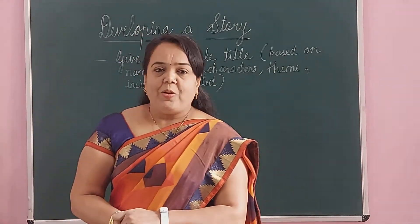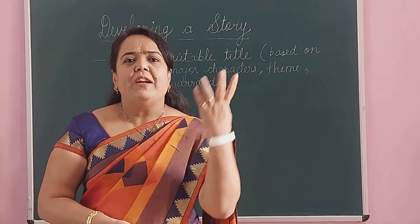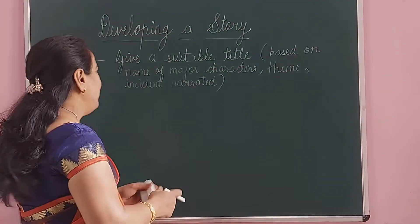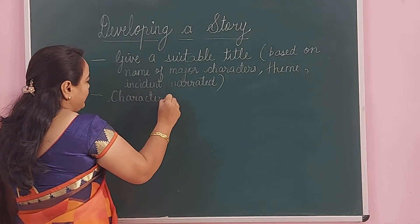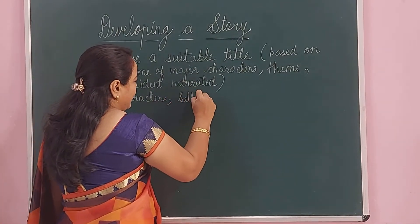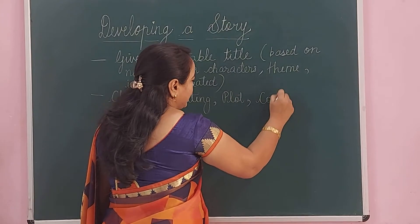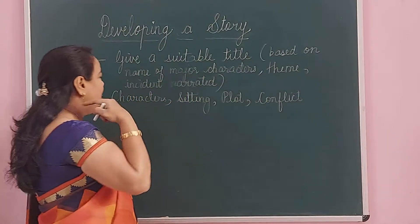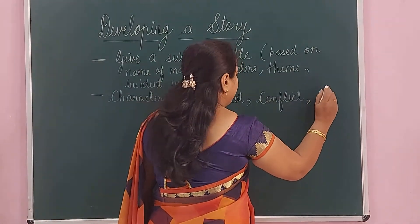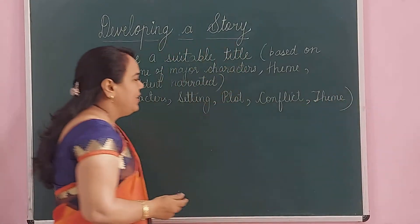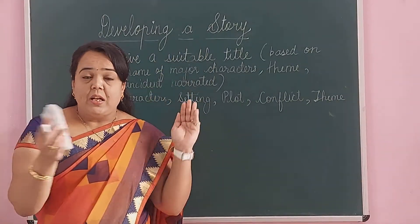Now, if you want to start writing, always remember that any story consists of five main elements. The elements of a story are: characters, then setting, then plot, then conflict, and then theme — what exactly the theme is that has been discussed by the writer. These are the main aspects of a story and your story should have all these aspects.